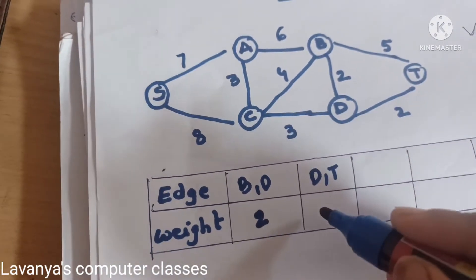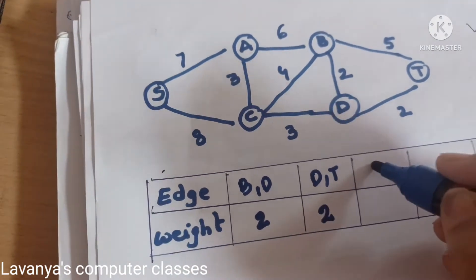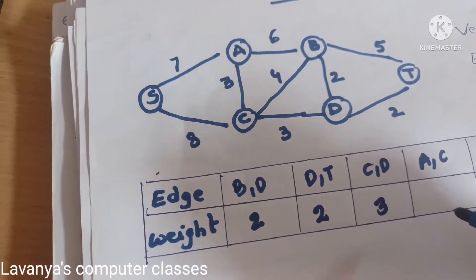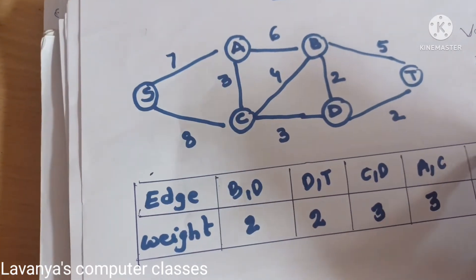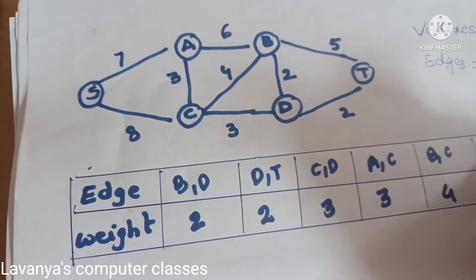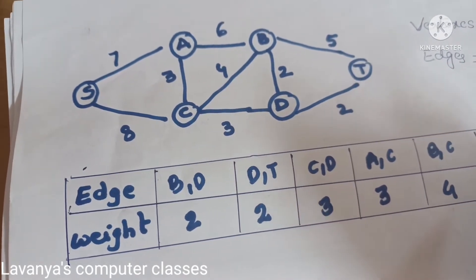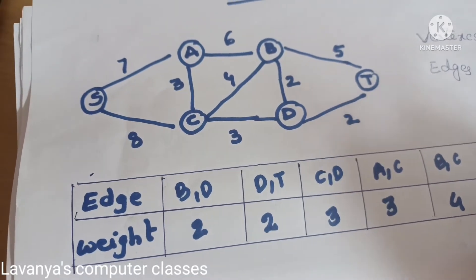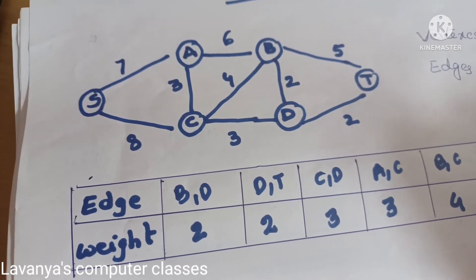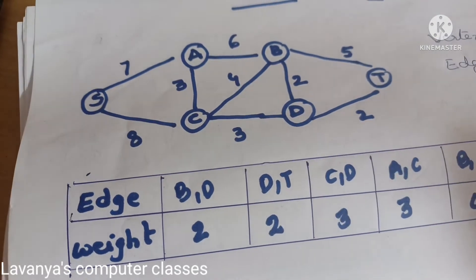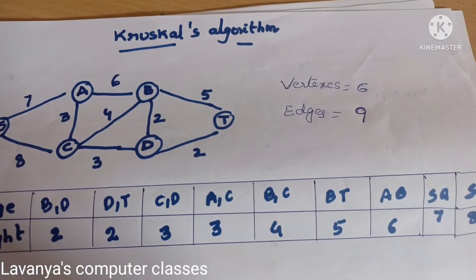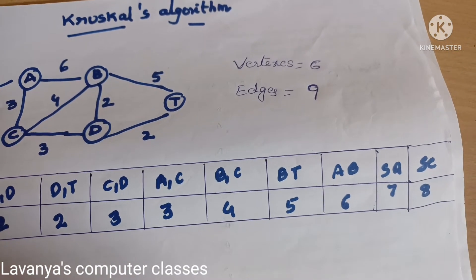In this graph, the minimum weight is 2, between edges B–D and D–T (both weight 2). Next is C–D with weight 3, then A–C also with weight 3. Then B–C with weight 4, then B–T with weight 5, then A–B with weight 6, then a weight of 7, and finally the last one with weight 8.